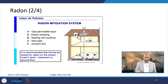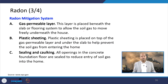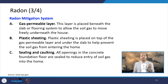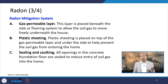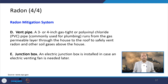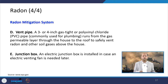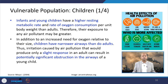To manage radon, install a better ventilation system with special ventilation pipes where radon enters from underground soil. Gas-permeable layers, plastic sheeting, sealing and caulking, vent pipes, and junction boxes are measures that can be used for radon mitigation.